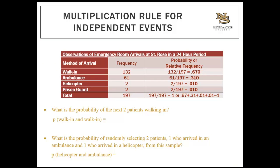Now give this one a try and pause the video. The first problem: what is the probability of the next two patients walking in? Take the probability for a walk-in — 0.67 — and multiply it by itself for two patients: 0.67 times 0.67 equals 0.449. Based on this sample, there's a 44.9% chance the next two patients will both be walk-ins. For the next example: the probability of one helicopter arrival (0.01) times one ambulance arrival (0.31) equals 0.003 — a 0.3% chance.